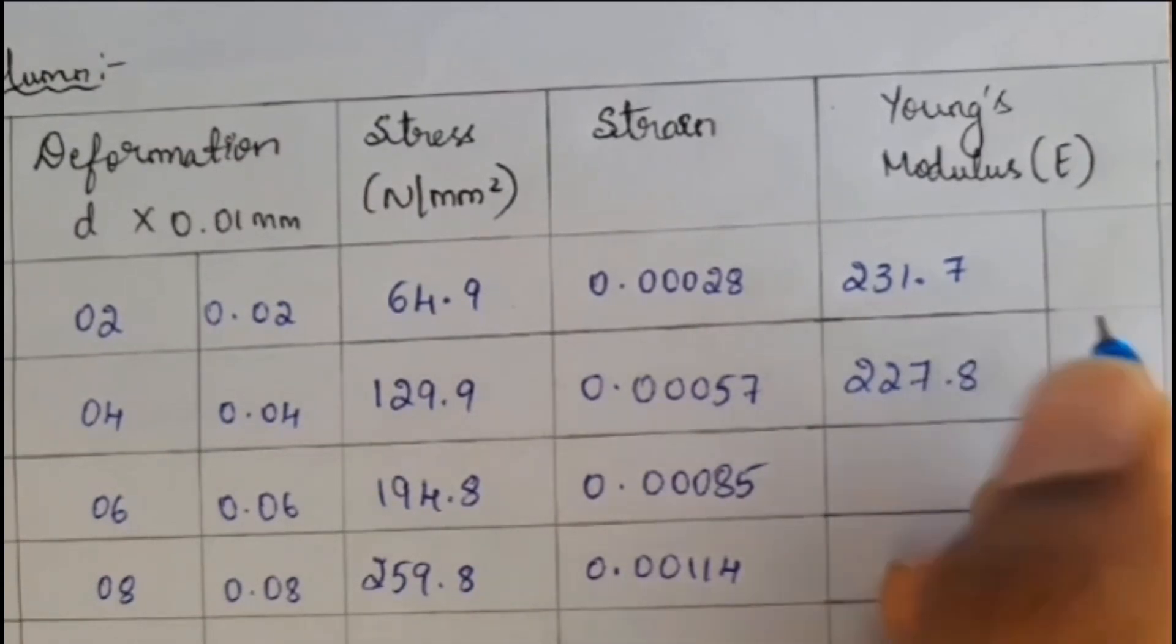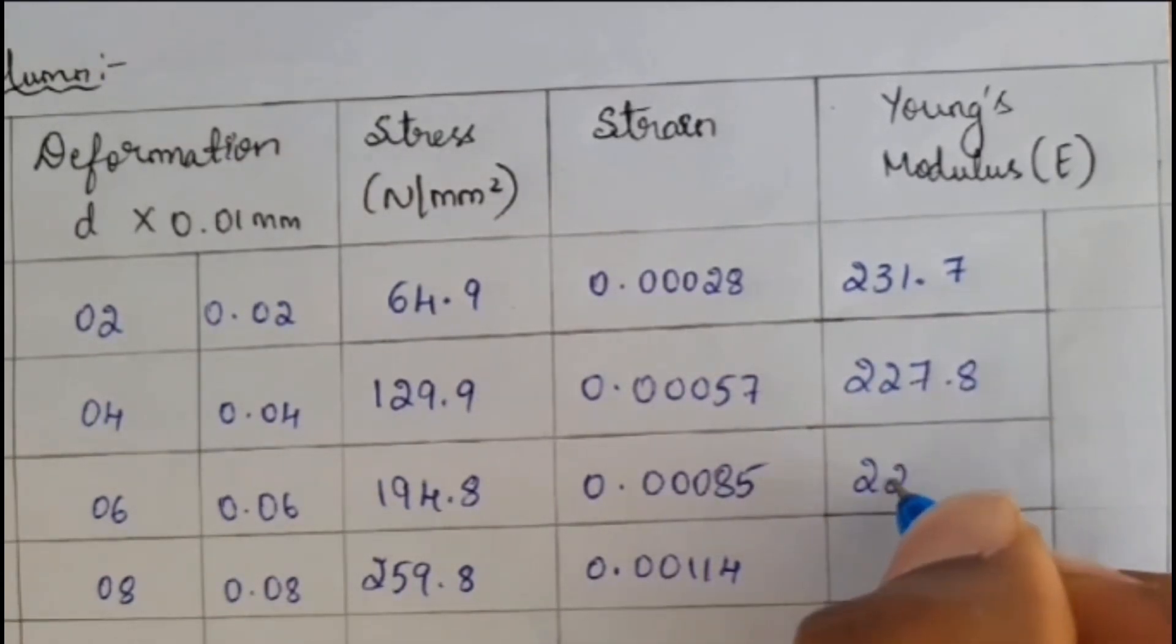That is 64.9 divided by 0.00028. That is you have to consider 0.028. That's all. I mean you have to multiply by 1000. Because you will be getting as, it will be coming under Newton per mm square. So you have to make it as Newton per mm square. So you will be getting 231 into 10 to the power of 3. So you have to reduce that. And you will be writing as 231.7 Newton per meter square. That is Pascal also. For first value we will be getting 231.7.